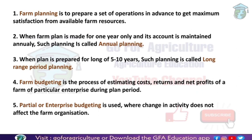Long range planning means when a plan is prepared for long years — 5 to 10 years — it is called long range planning. It is very useful for farm businesses. Basically, a farmer aims for maximum satisfaction, and besides that he will also look for profit over a longer period of time. If he designs his plan for the upcoming 5 to 10 years, he can literally grow crops and get profit for the next 5 to 10 years. These are basically designed for big farm businesses with large land areas.